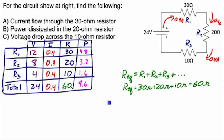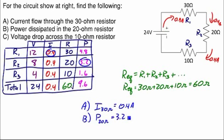Now all I have to do is answer the questions I was originally asked. Find the current flow through the 30 ohm resistor, right from our table, that's 0.4 amps. Find the power dissipated in the 20 ohm resistor, right from our VERP table, that must be 3.2 watts. And finally, the voltage drop across the 10 ohm resistor is 4 volts. So using my VERP table, I have answered all of the questions required for this series circuit.